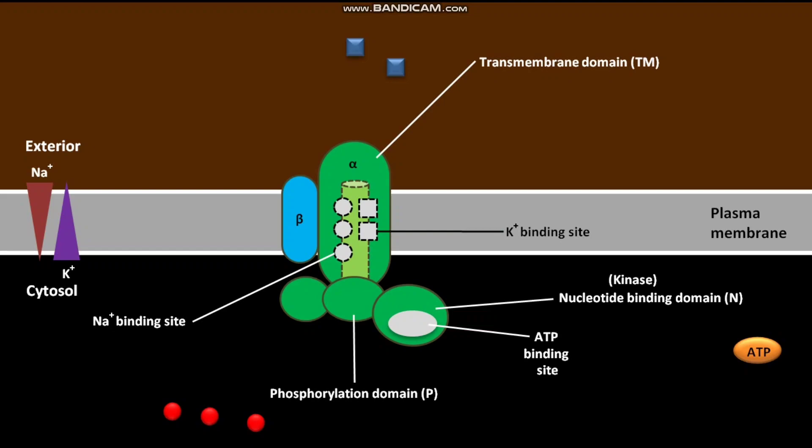The third domain is the phosphorylation domain (P), also present in the cytosol. It has a specific aspartate amino acid (ASP) and functions as a substrate. The fourth domain is the actuator domain (A), also in the cytosol. It connects two of the membrane-spanning helices and functions as a phosphatase.